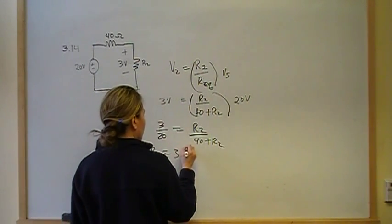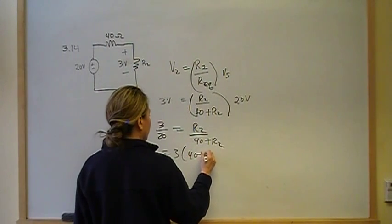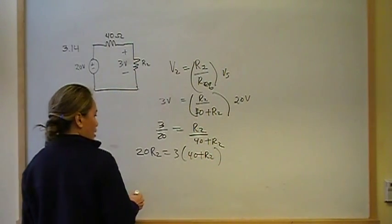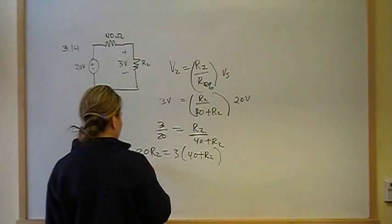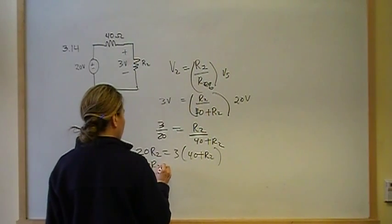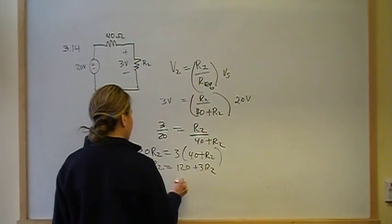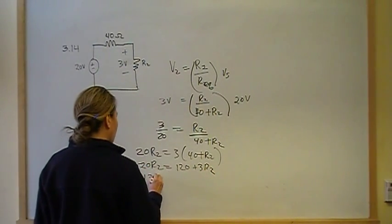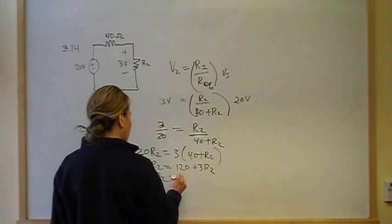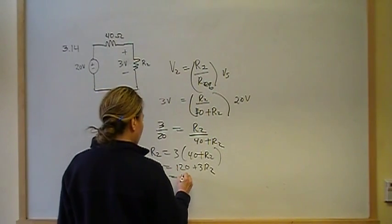So then we have 3 over 20 is equal to R2 over 40 plus R2. And then this just becomes a cross-multiply algebra problem. So, 3 times 40 plus R2 gives me 20R2. 120 plus 3R2. Bring that over here. We have 17R2 is equal to 120.